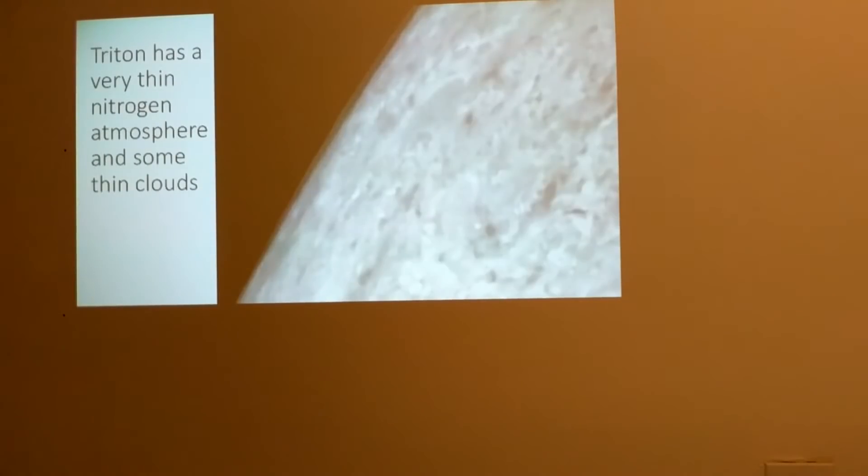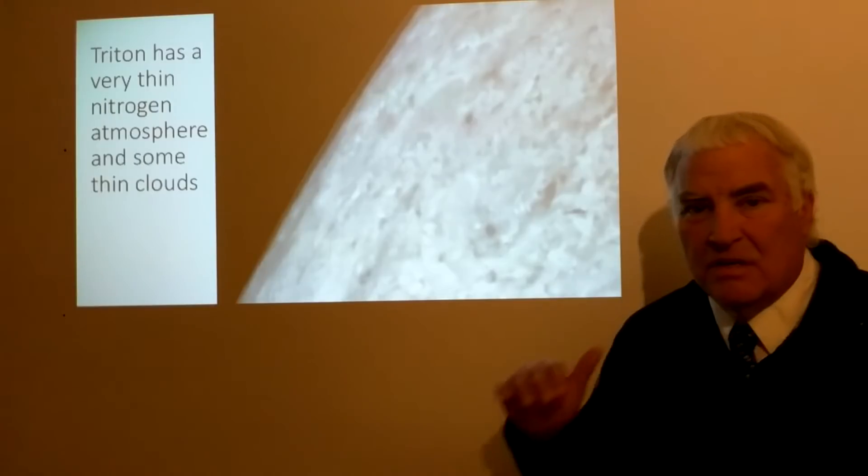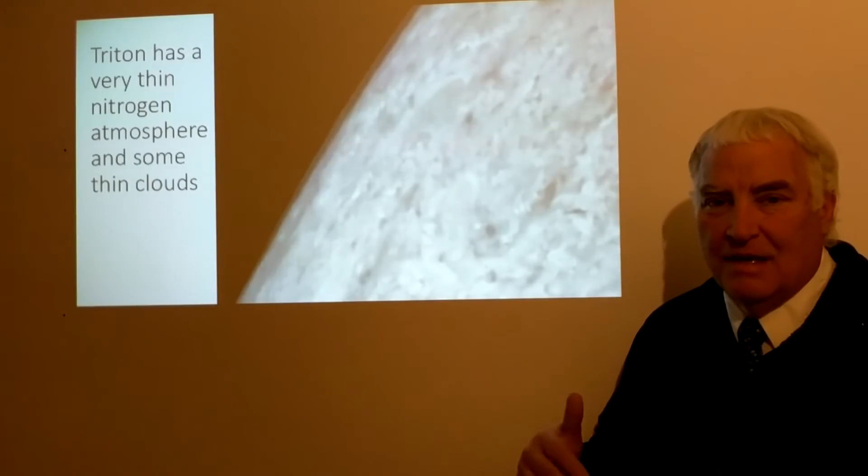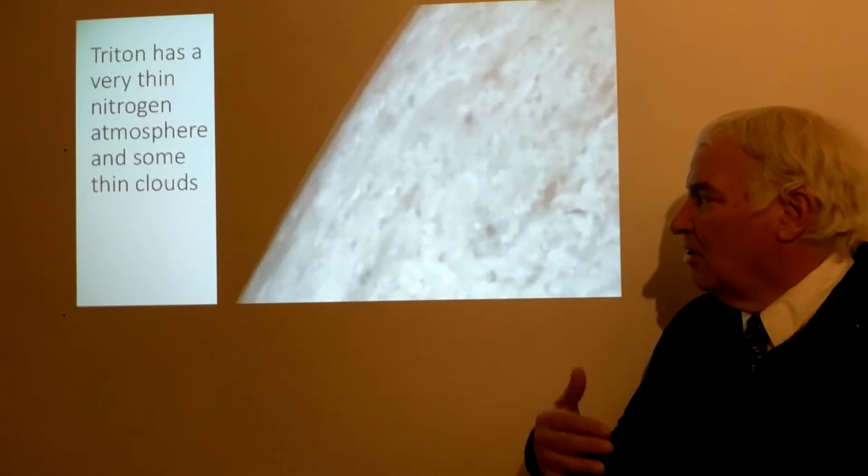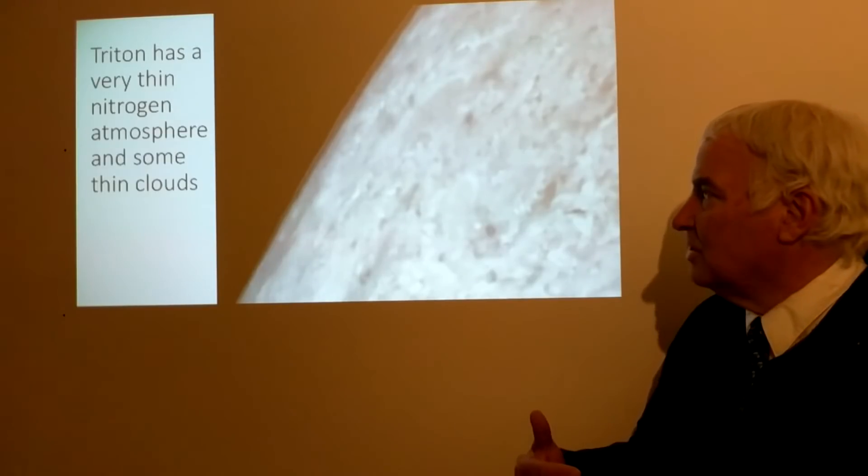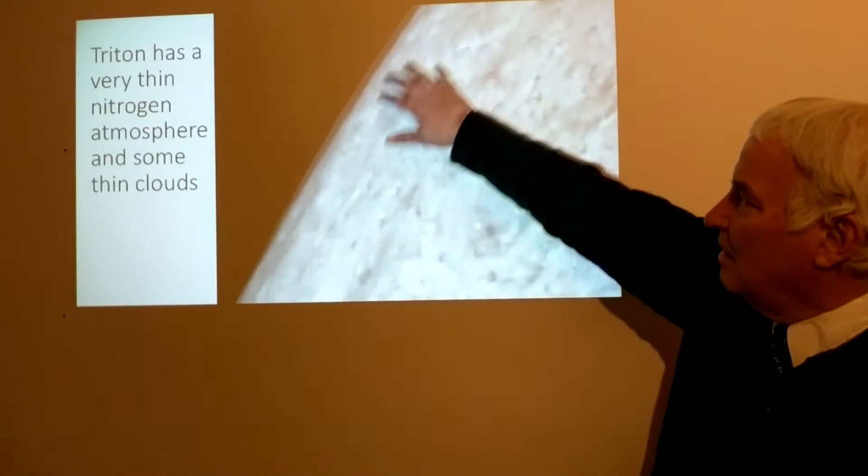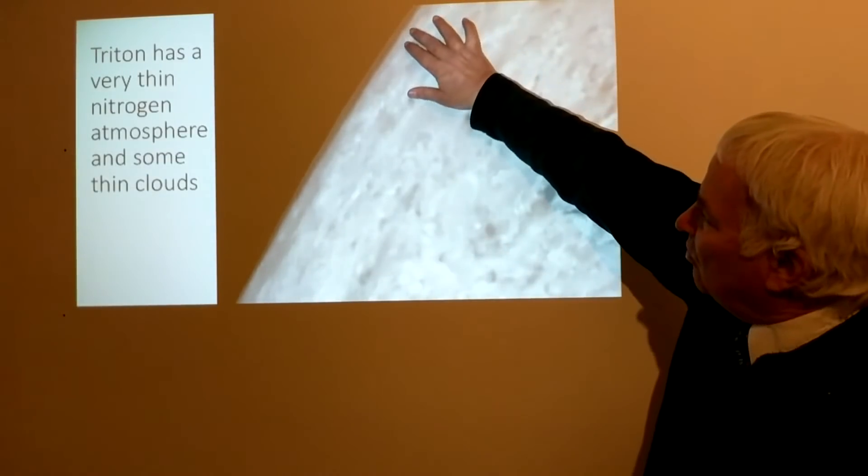Triton has a very thin atmosphere. It's made of nitrogen, so that makes it one of only three objects in the solar system that has a predominantly nitrogen atmosphere. The most dense nitrogen atmosphere is the moon Titan, which has about four times the atmospheric pressure of Earth. Earth has a nitrogen atmosphere, predominantly 78%, and oxygen 21%. Triton has a very thin, mostly nitrogen atmosphere.